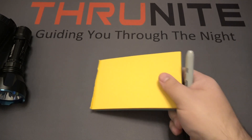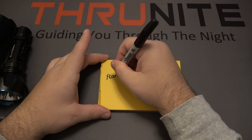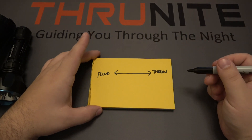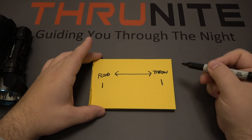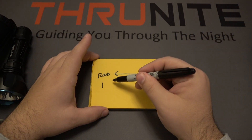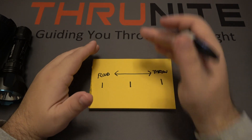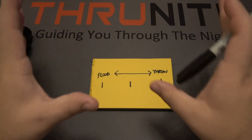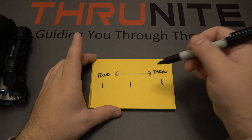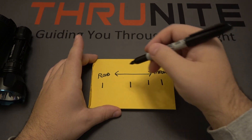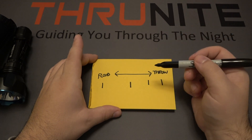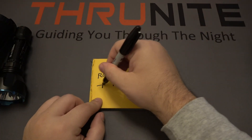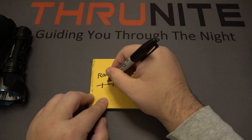Let me grab another piece of paper to illustrate this. On this side we have flood, and on this side we have throw. All flashlights have some combination — either completely all flood, completely all throw, or in most cases with a regular EDC light, anywhere in between. It could be a nice combination right in the middle with a little bit of distance, a little bit of a focused beam, but also enough spill. 'Spill' is a term you'll hear in the flashlight community — it means the light that's around the center beam. You can have one that's heavily one-sided — mostly throw but still has some spill or flood — and vice versa. The line of lights could be anywhere, any combination of flood and throw.